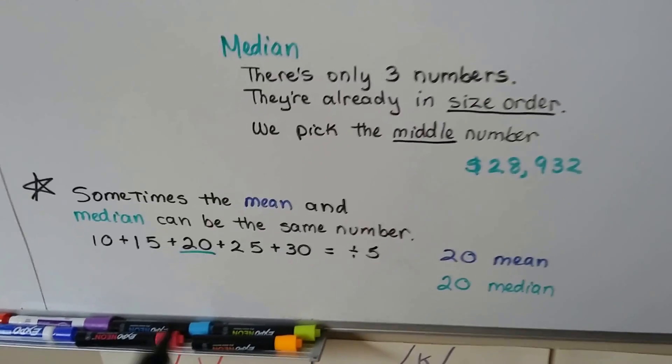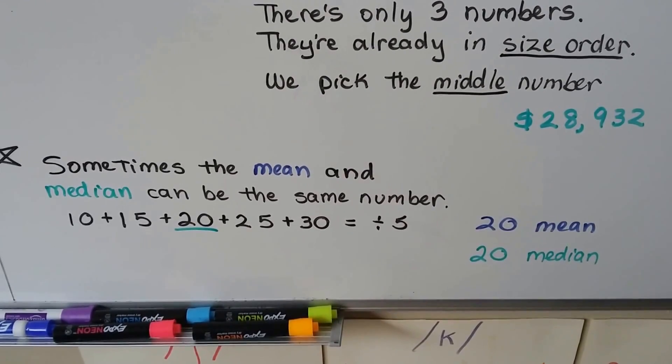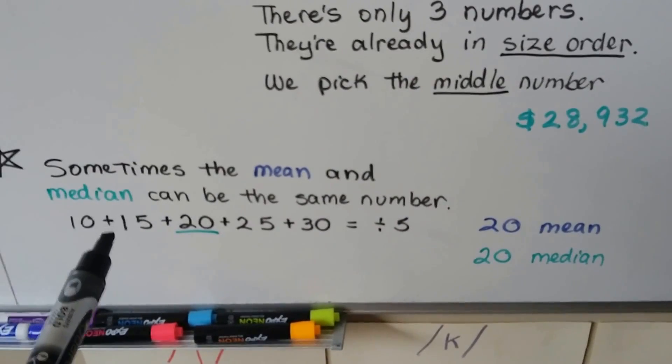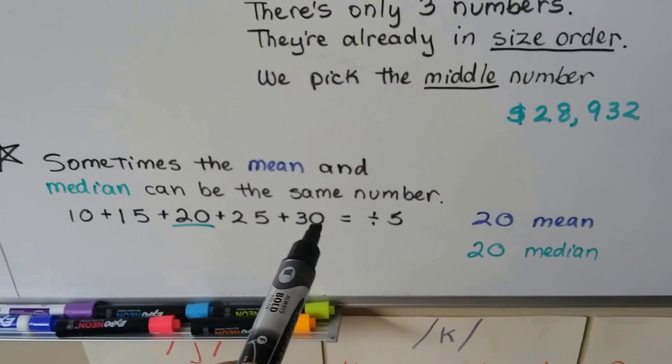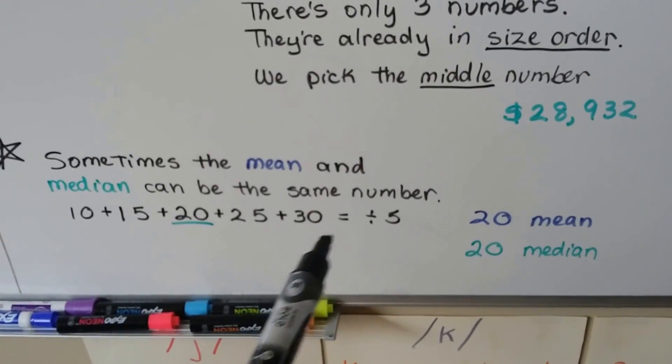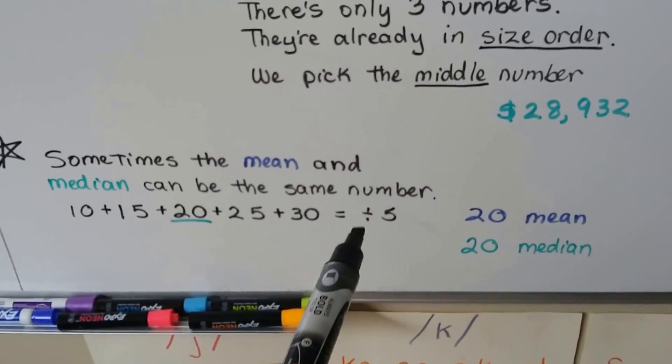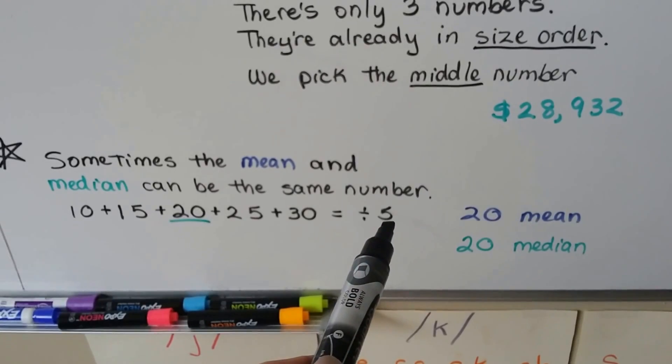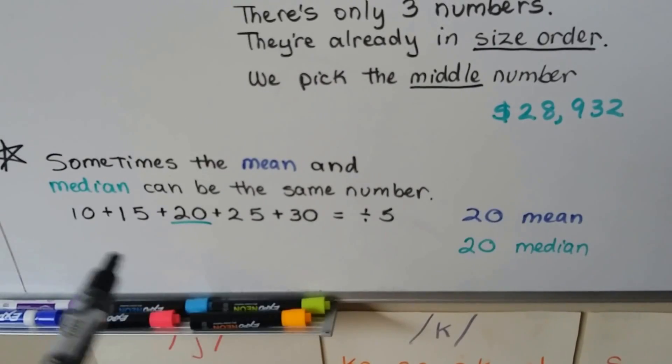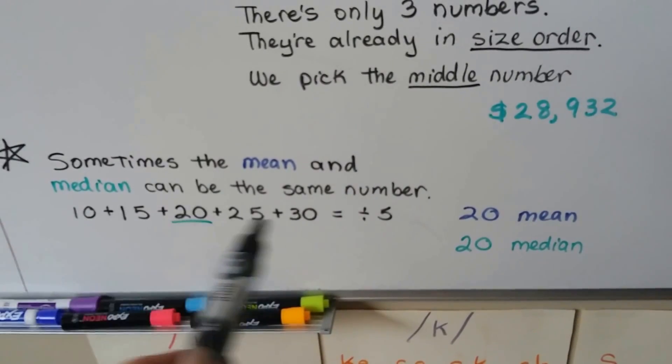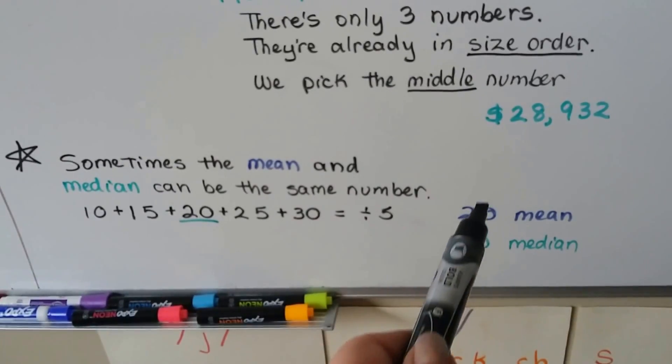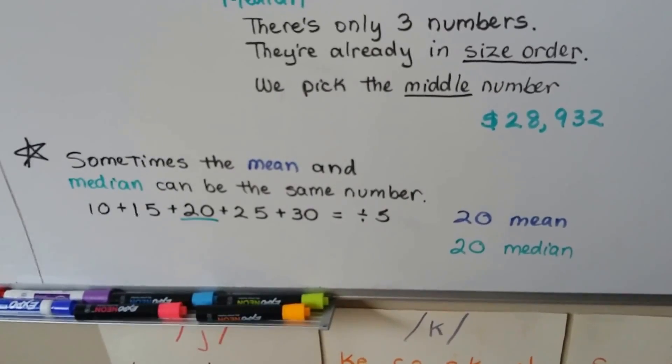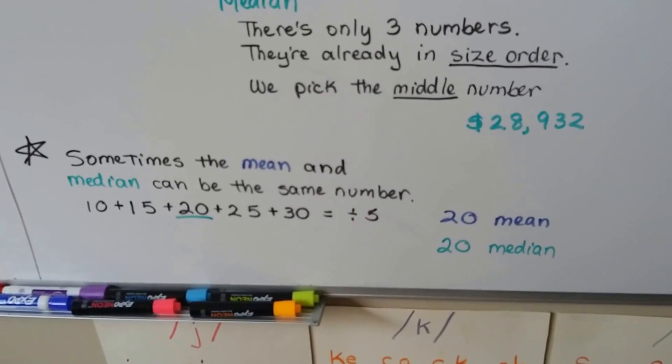Now, sometimes the mean and median can be the same number. If we add 10 plus 15 plus 20 plus 25 plus 30 equals, we're going to get 100. And when we divide that by 5, we're going to get a 20. And there's five numbers here. They're in size order, and if you look at the middle number, it's a 20. So in this case, the mean and median were the same number, and that happens sometimes.